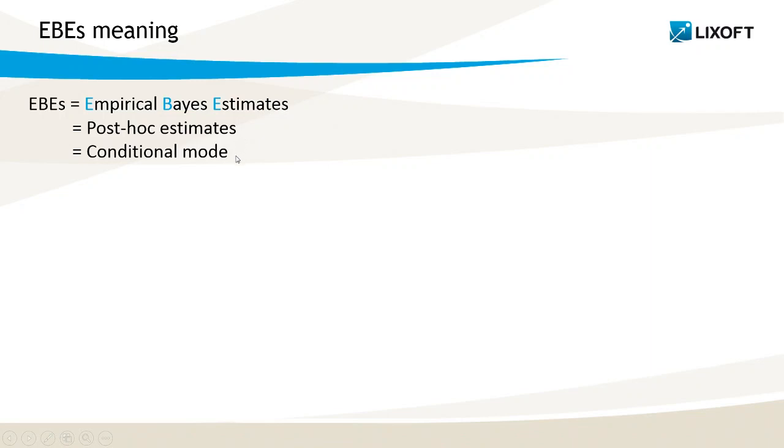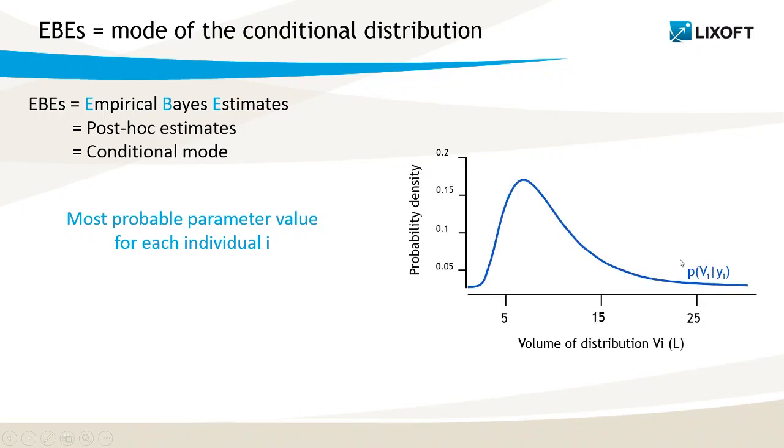The EBEs are the mode of the conditional distribution for each individual, so the most probable parameter value for each individual. If this curve represents the probability density function of the conditional distribution for the volume of individual i, the mode is the value having the highest probability, so the peak of the curve. We are looking for the value that maximizes the conditional distribution.